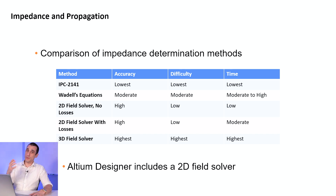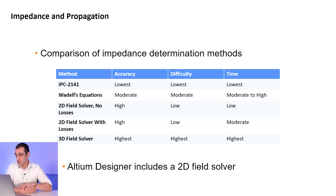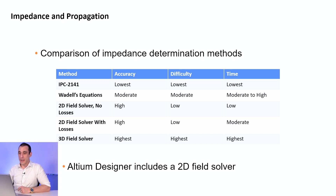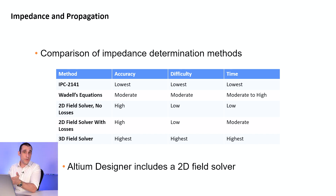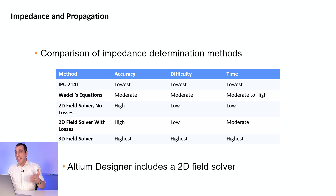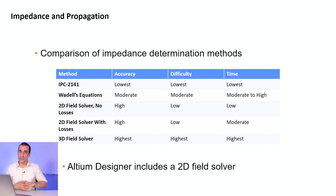Wadell's equations — we will provide a link to Wadell's textbook for anyone who wants to buy it — are much more accurate but can be much more difficult. The time to use them is moderate to high because there's some bookkeeping involved. There are calculators out there that use both sets of equations — IPC 2141 and Wadell's equations. So if you're getting different results from different calculators, it's because they're using different sets of equations. If they don't state which equations they're using on their pages, you may not know it — you would have to look at the code to determine which equations they're using.